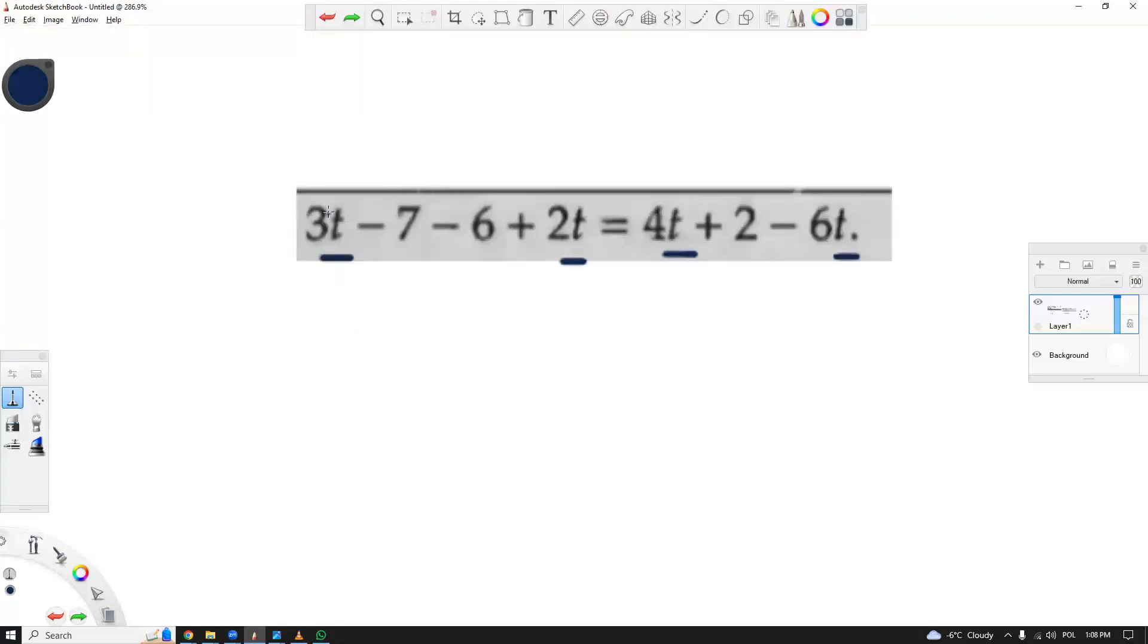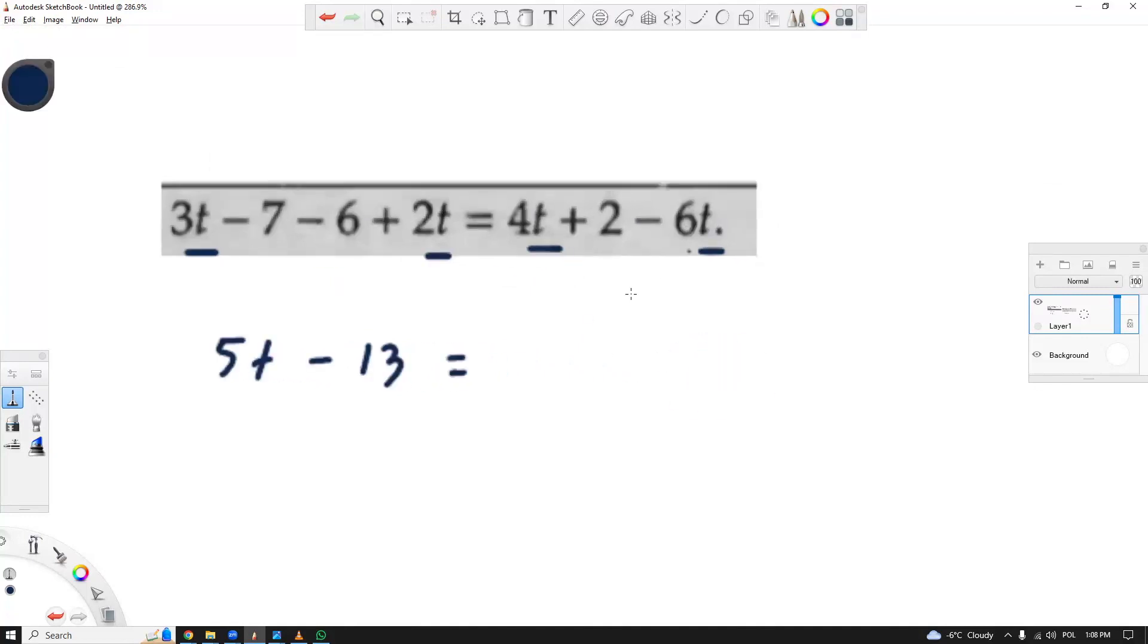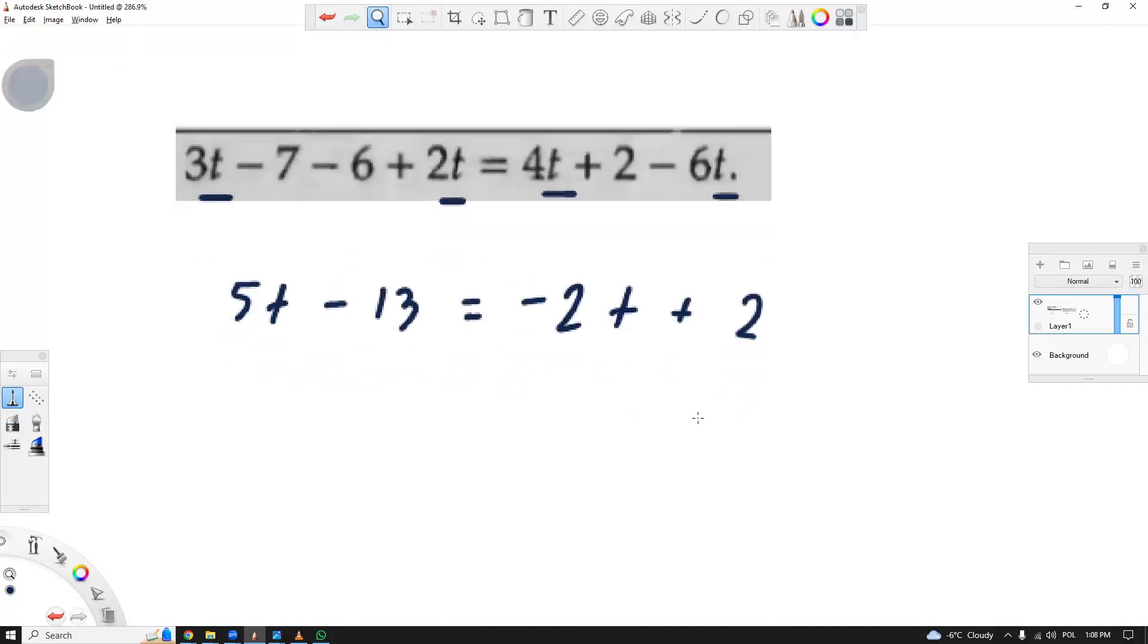So let's try working on that. 3t plus 2t, it's 5t, and negative 7 minus 6, it's negative 13, equals 4t minus 6t, it's negative 2t, plus 2. So that's a bit more clear now, but still, I have t on both sides, variables on both sides, what do I do?